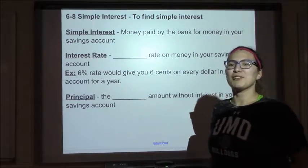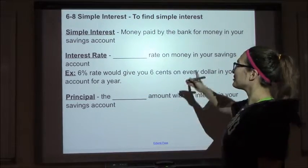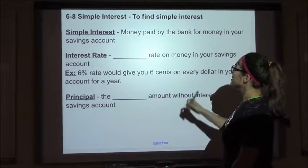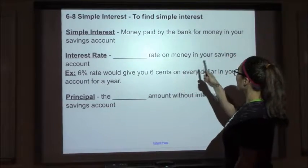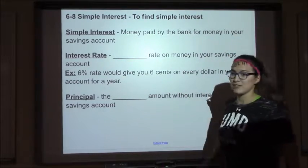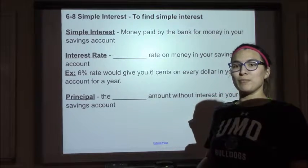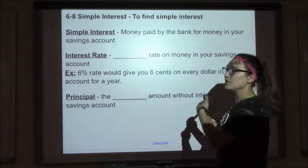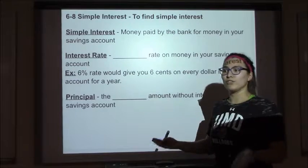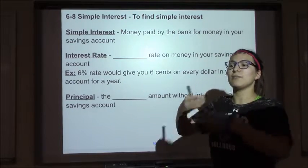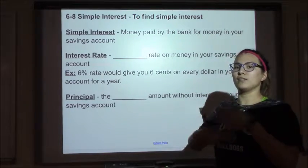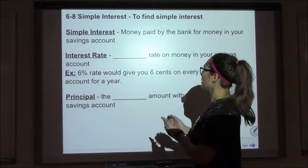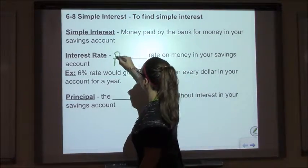Hello class, today we're going to be learning about simple interest and how to find it. Simple interest is money paid by the bank for money in your savings account. When you go to a bank and put in money, they will give you simple interest in order for you to keep your money there, and you'll keep adding money to your account. An interest rate is a percent or percentage rate on money in your savings account.